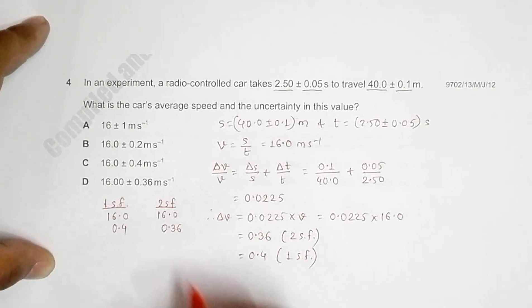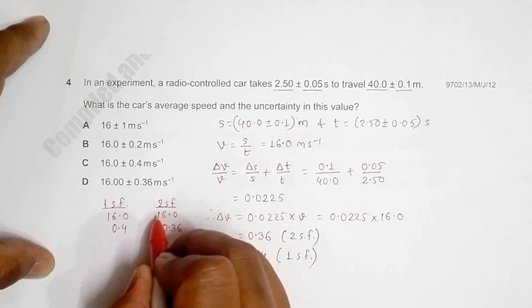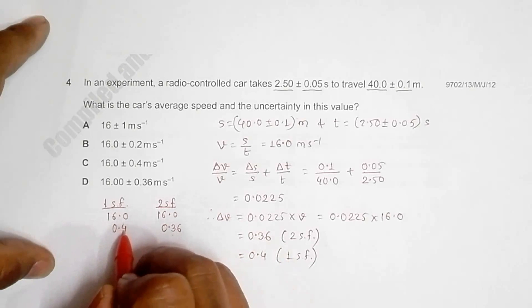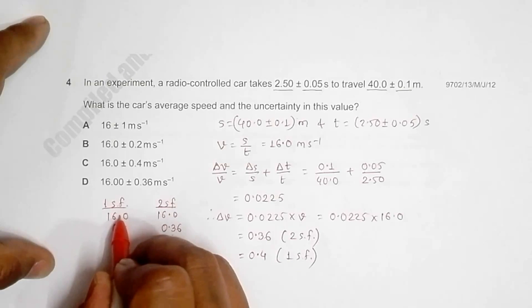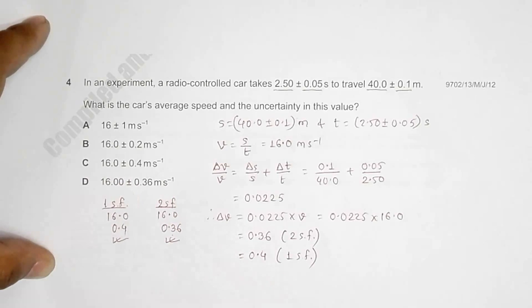The quantity should be correct where error starts from here, so we are writing the quantity up to here. This is correct: error starts from the first digit of decimal and quantity also ends at the first digit after decimal. This is also correct, so we have to see among the choices which one is there.